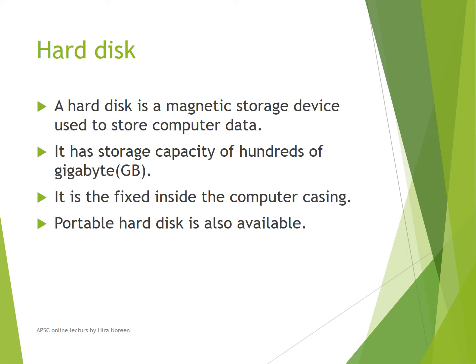Hard disk is the most commonly used storage device. It is a magnetic storage device used to store computer data. When we use the computer system, the hard disk stores our data and programs. It has a storage capacity of hundreds of gigabytes, depending on what capacity of hard disk we buy. It is fixed inside the computer casing — inside the CPU in a desktop, or fixed in the casing of a laptop. A portable external hard disk is also available, which you can use to store your data and easily carry from one place to another.